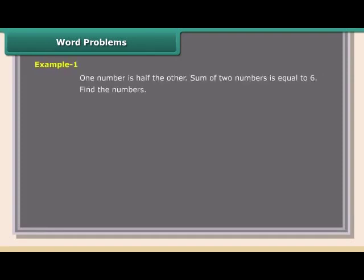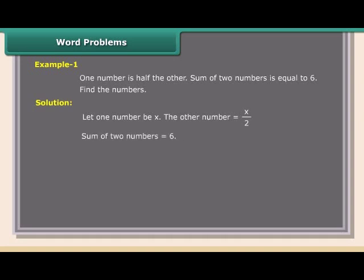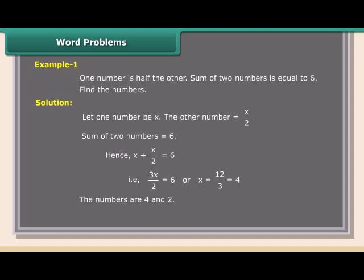Word problems — Example 1: One number is half the other. The sum of two numbers is 6. Find the numbers. Solution: Let one number be X; the other number is X/2. X + X/2 = 6; 3X/2 = 6; X = 12/3 = 4. The numbers are 4 and 2. Check: the sum of the two numbers is 6. Hence the answer is correct.